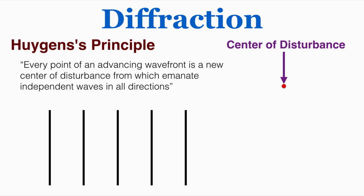This can be a little strange, but I think it'll start to make sense if I give you a kind of visual example. What does this principle mean by a center of disturbance? A center of disturbance is a kind of center from which disturbances are radiating outward in all directions.